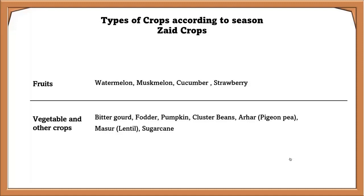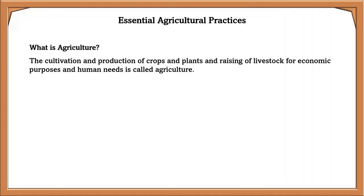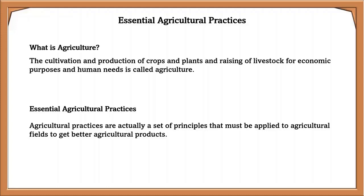Next, we will look at essential agriculture practices. Agriculture is the cultivation and production of crops and plants and the raising of livestock for economical purposes and human needs. Agriculture practices are a set of principles applied to agricultural fields to get better products.